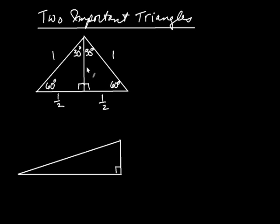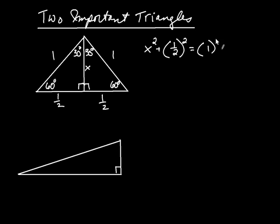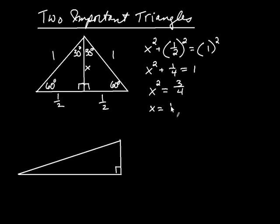The question is: what would this length be right there? We can figure that out using the Pythagorean theorem. This is a right triangle, so x squared plus one-half squared is equal to one squared. So we get x squared plus one-fourth equals one. Subtracting one-fourth from both sides, x squared equals three-fourths. Using the square root property and noting that x represents a positive length, x equals the square root of three over two.